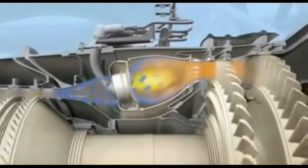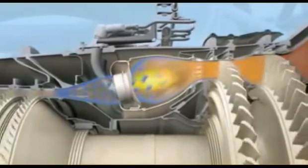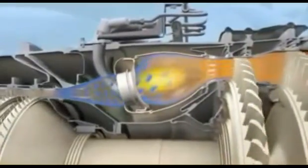The DLN 1.0 combustor has six individual fuel nozzles in the primary combustion zone and a single fuel nozzle in the secondary combustion zone.